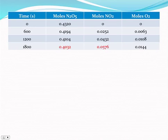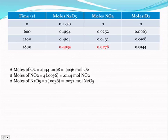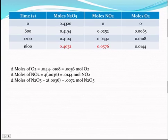They told us to fill in the chart. The change in moles of O₂ is from 1800 to 1200 seconds. From the previous slide, 1 mole of O₂ corresponds to 4 times the moles of NO₂ and 2 times the moles of N₂O₅. So we add the change for NO₂ to the moles at 1200 seconds, and subtract it for N₂O₅ because N₂O₅ is being consumed while NO₂ is being produced.